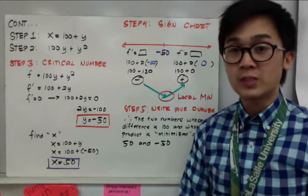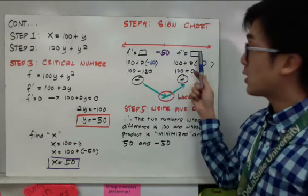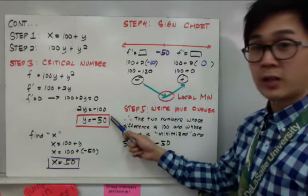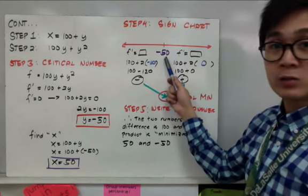All we need to do is to prove if it's maximized or minimized. In this case, I'm going to use the sign chart for step number four. And in my sign chart, I'm going to use my critical number for my first derivative on step number two.